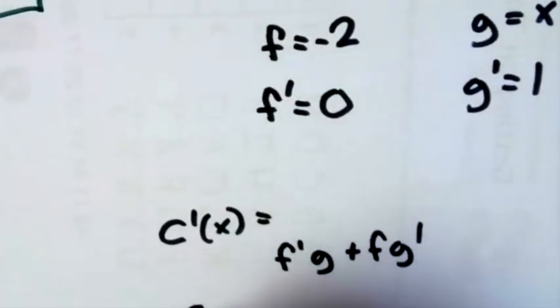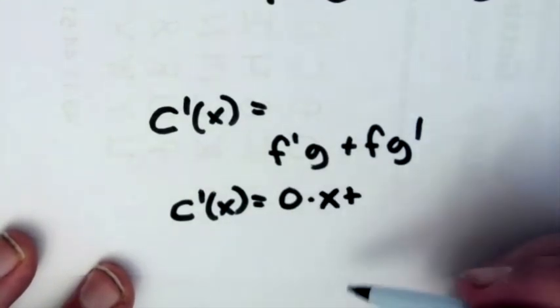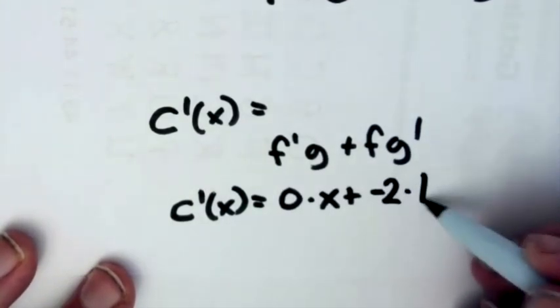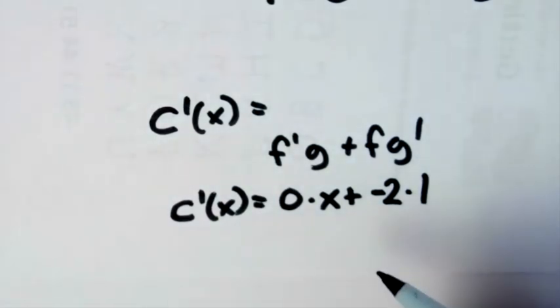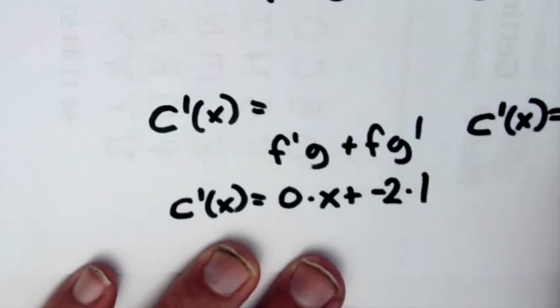So this is going to end up being 0 times x plus negative 2 times 1. 0 times x is just 0, so I still end up with c prime of x is equal to negative 2.